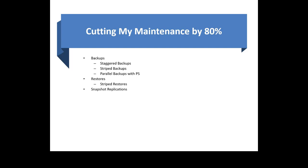We'll also cover snapshot replication — not the type of replication you know, but a different type. Many of you may have already heard of it and we'll discuss it in significant detail. A natural corollary to snapshot replication is copy data virtualization. We'll look at what it is, how it can save you literally millions of dollars, and how to check your database integrity.